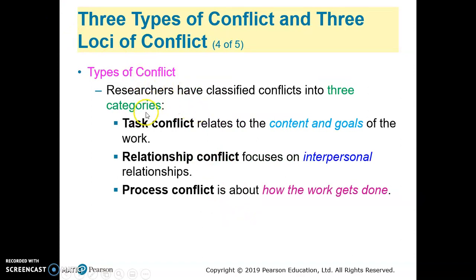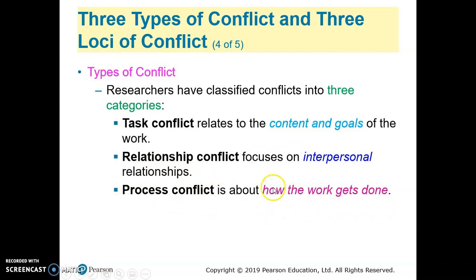Researchers classified conflicts into three categories: task conflicts, which relate to the content and goals of work activities; relationship conflicts, which relate to interpersonal relationships between individuals; and process conflict, which is about how the work gets done.